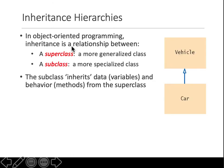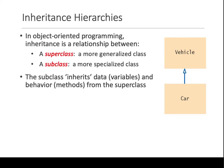Inheritance is a relationship between a superclass and a subclass. Superclasses are generally generalized classes and a subclass is a more specialized class. For example, a car is a vehicle — a motorcycle is a vehicle, a van is a vehicle, a truck is a vehicle. Any property that a vehicle has, all of these will have those properties.